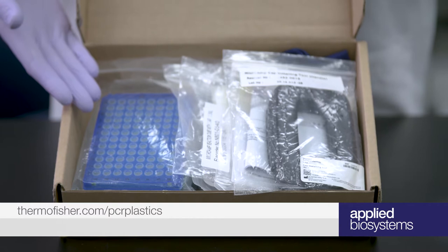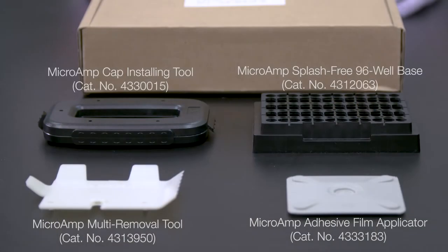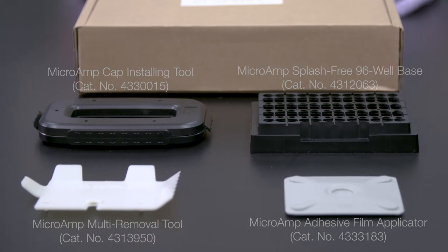You can find everything you need for setting up your PCR reaction in your Applied Biosystems Thermal Cycler Starter Kit or at thermofisher.com/pcrplastics.